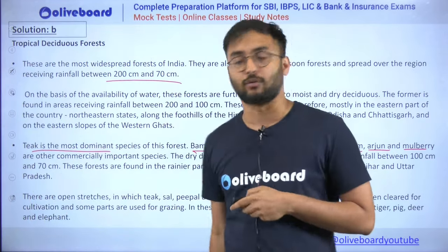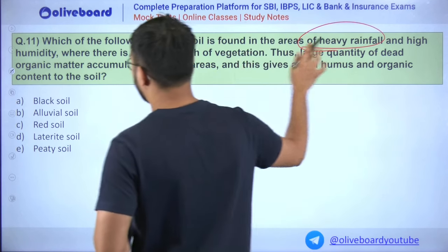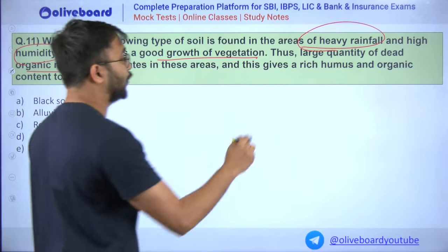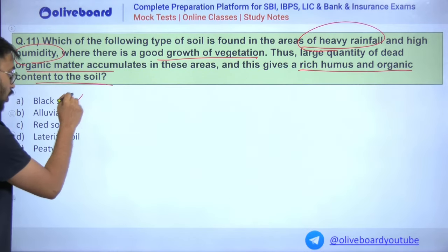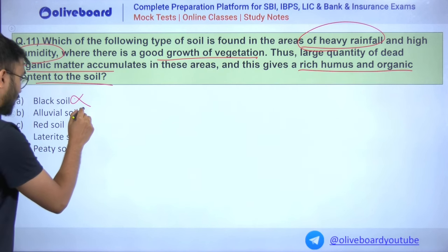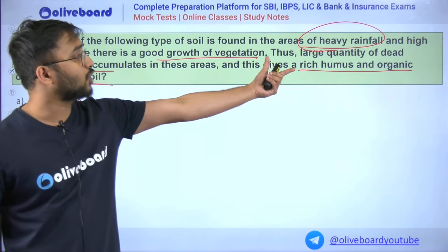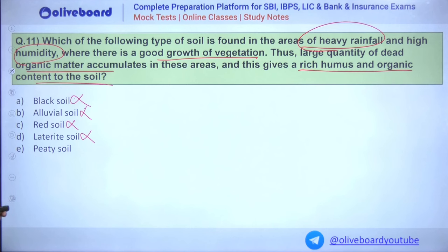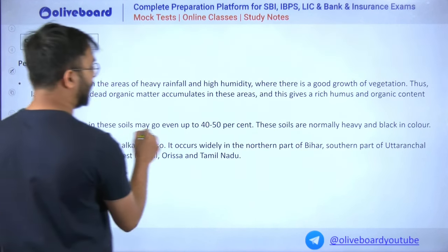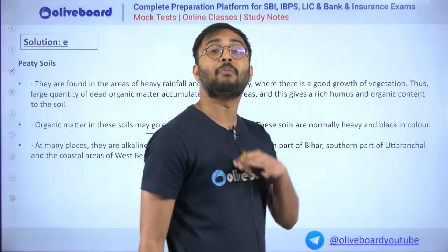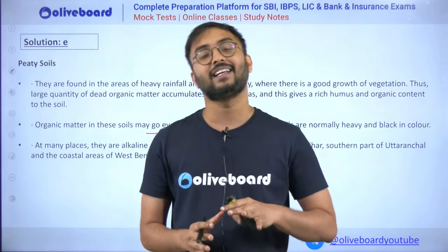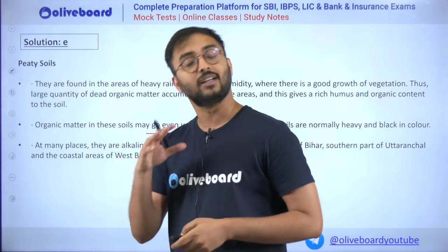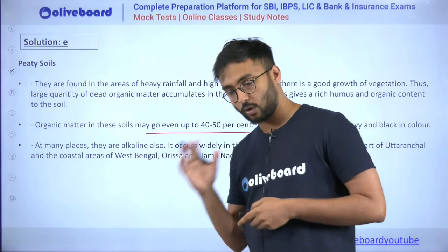Question 11: Which soil type is found in a heavy rainfall region with high humidity, good vegetation growth, and large dead organic matter accumulated, resulting in rich humus and organic content? Black soil (volcanic origin) — no. Alluvial soil — no large quantity of dead matter. Red soil — not rich in humus. Laterite soil — not rich in humus. Therefore, the answer is PT soil, found in marshy lands. Waterlogged conditions result in addition and decomposition of organic matter, leading to excessive humus in this soil.